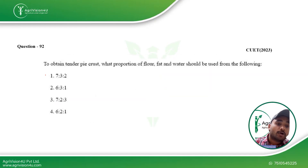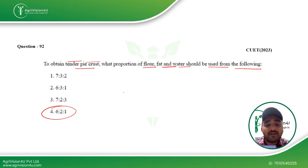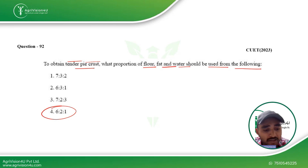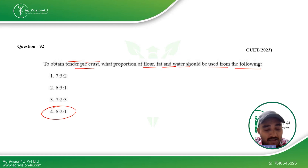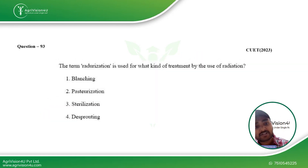Next question: to obtain a tender pie crust, what proportion of flour, fat, and water should be used? The ratio is 6:2:1. These ratios are prominent because baking requires experience and is a type of art, but you can follow a standard recipe. For example, if you have 600 grams of flour, 200 grams of fat and 100 grams of water will be required.